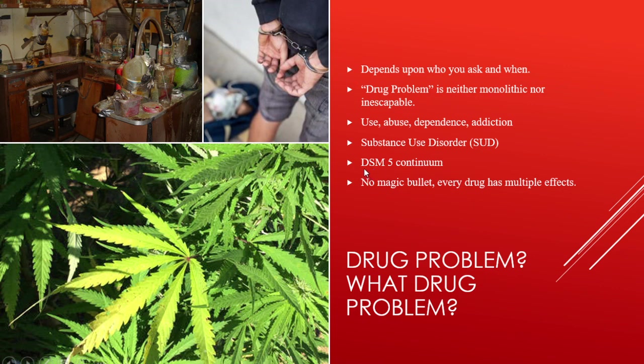DSM-5 describes the continuum. That's the Diagnostic and Statistical Manual, fifth edition, of the American Psychiatric Association. This continuum moves away from terms such as abuse and dependence that were in all the early incarnations of the DSM. It basically describes all human beings lying on a continuum between non-use and total addiction, and every human being who has ever lived falls on that continuum somewhere.